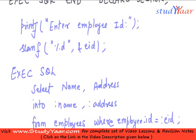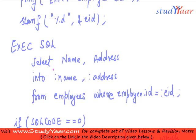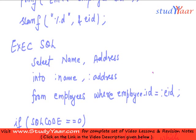We are going to talk about cursors. In our previous example, we were executing a query: SELECT name, address FROM employees WHERE employee_id equals something. This query gives a single row, assuming employee_id is the primary key. Since it returns a single row, we can store the fields in variables. But what happens if the query gives multiple rows? For example, if we want to print the names and addresses of all employees in a particular department.